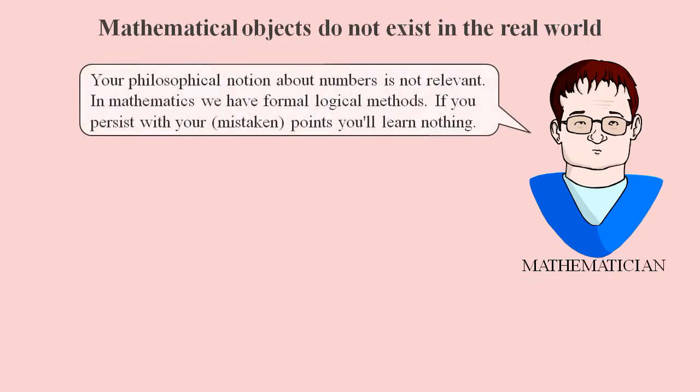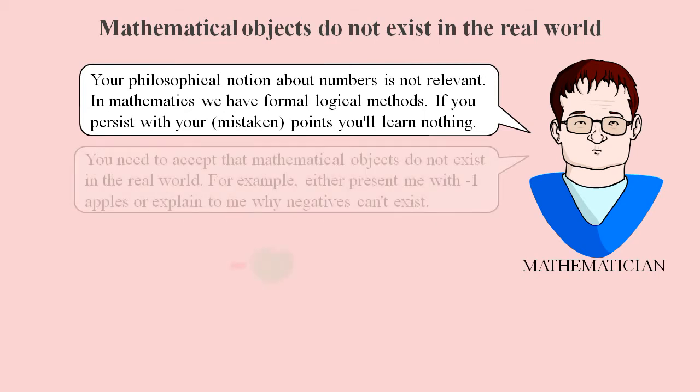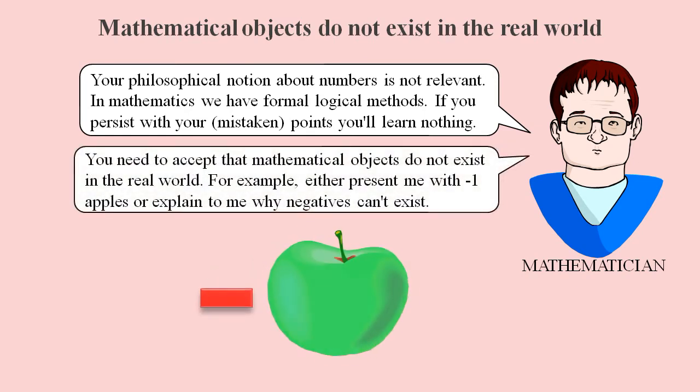But mathematicians won't listen to such ramblings, as they want to use their formal symbolic language which was designed to convey their strange abstract ideas. They'll think we must be claiming that negative numbers can't exist. Otherwise, how do we explain how minus one apple could exist in the real world?